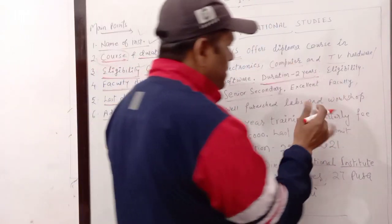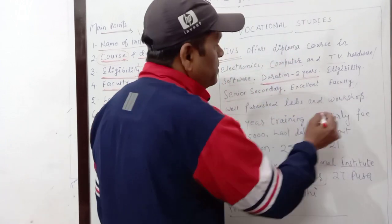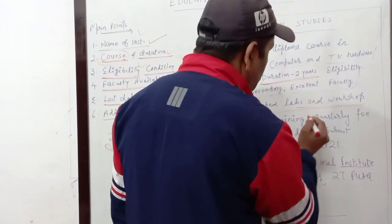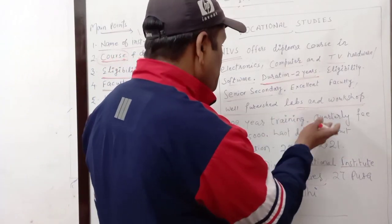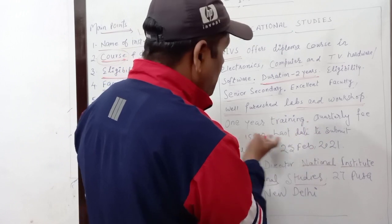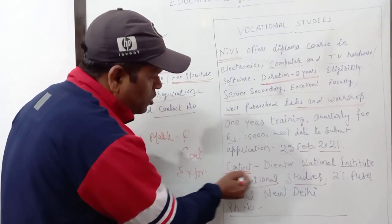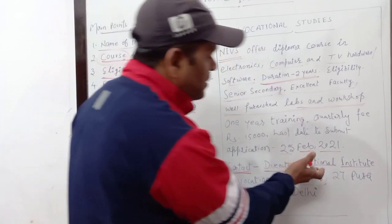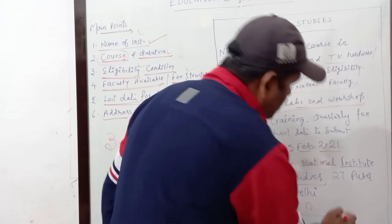You can add faculty qualifications if you want; here it is kept short as 'Excellent Faculty.' Additional qualities like well-furnished labs and workshop can be added to extend the word count. The quarterly fee is rupees 15,000. The last date to submit the application is 25th February 2021. Contact details include the Director, NIVS, National Institute of Vocational Studies, 27 Pusa Road, New Delhi, along with the phone number.